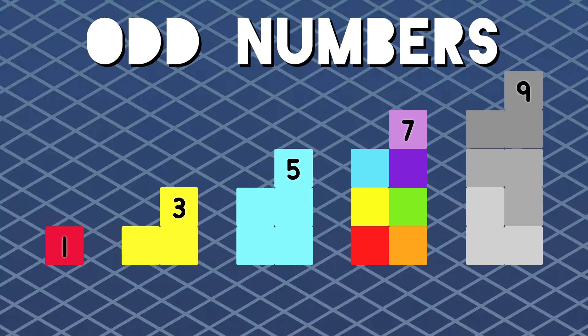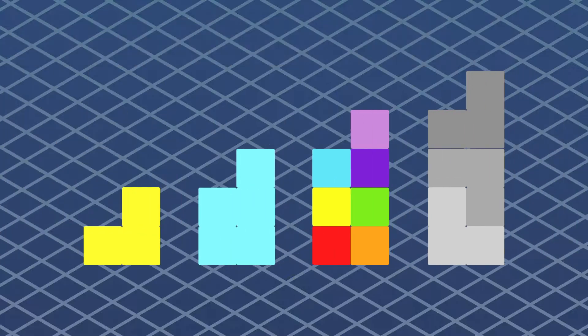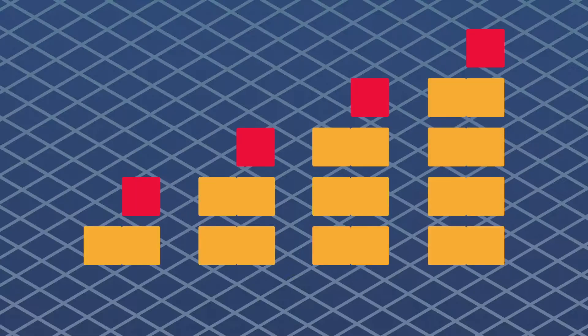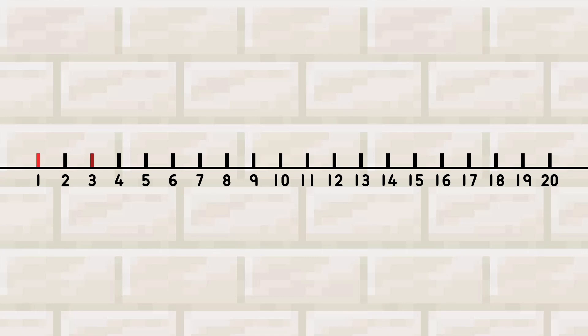We're the odd numbers and we're the rest on the line. We are 1, 3, 5, 7, and 9. Odd numbers can be split into groups evenly